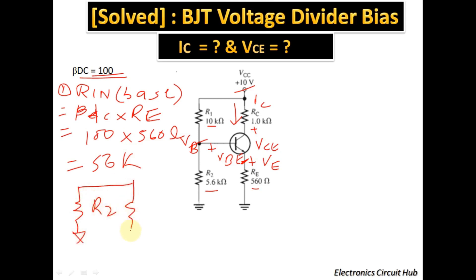In the equivalent circuit, R2 and R_in(base) are in parallel. R2 = 5.6 kΩ and R_in(base) = 56 kΩ. Since R2 is 10 times smaller than R_in(base), the equivalent parallel resistance is dominated by R2. Therefore, we can safely ignore R_in(base) in this calculation.